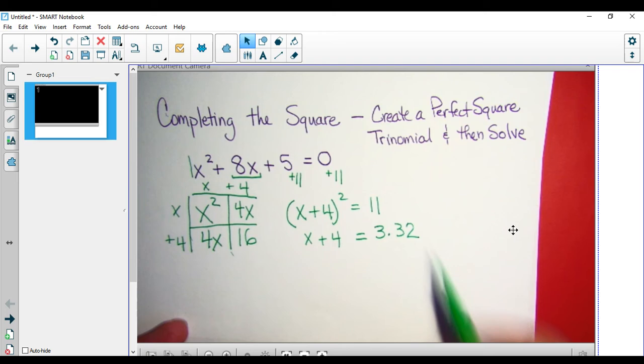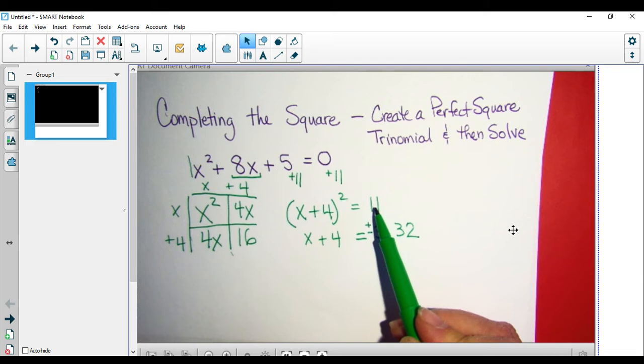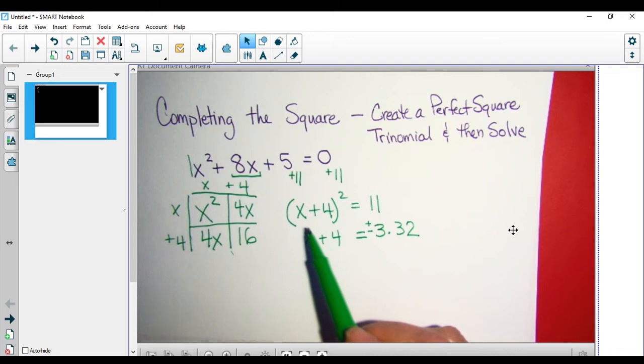But I know it can be either the positive or the negative, because this value squared is positive 11. I can square a positive value to get the positive 11. I can square a negative value to get the positive 11.